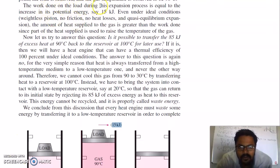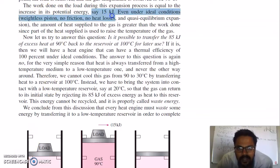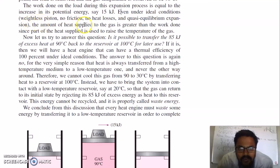The work done on the load during this expansion process is equal to the increase in potential energy, say 15 kJ. Even under ideal conditions — weightless piston, no friction, no heat losses, and quasi-equilibrium expansion — the amount of heat supplied to the gas is greater than the work done, since part of the heat supplied is used to raise the temperature of the gas.